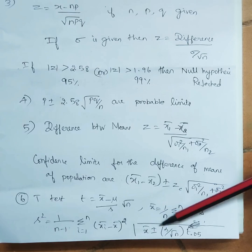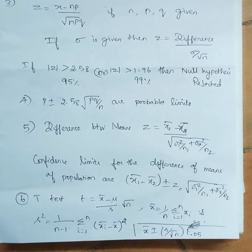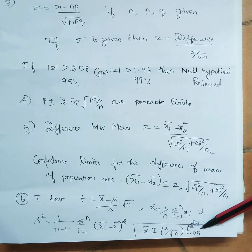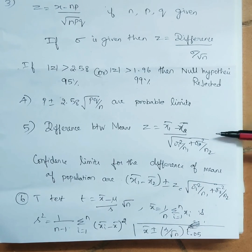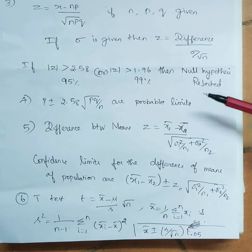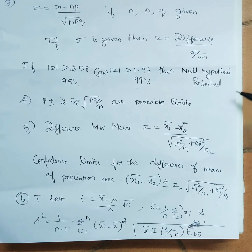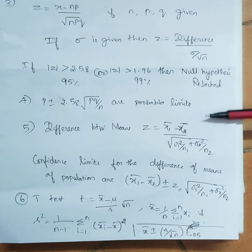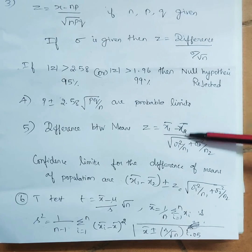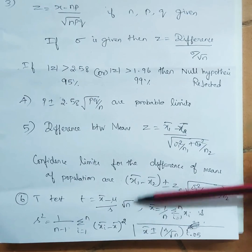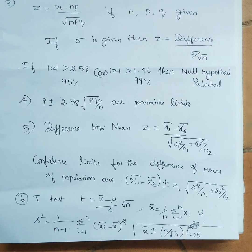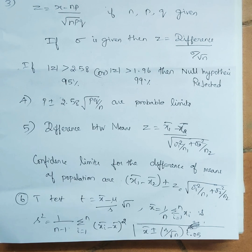The t-test formula is t = (x̄ − μ) / (s/√n), where s² = (1/(n−1)) × summation(xᵢ − x̄)². The probable limits are x̄ ± (s/√n) × t₀.₀₅. Chi-square formula is summation of (observed − expected)² / expected. For sampling problems, first determine if it's a one-tail or two-tail test; for t and chi-square distributions there is no one-tail or two-tail distinction. Module five is now complete.